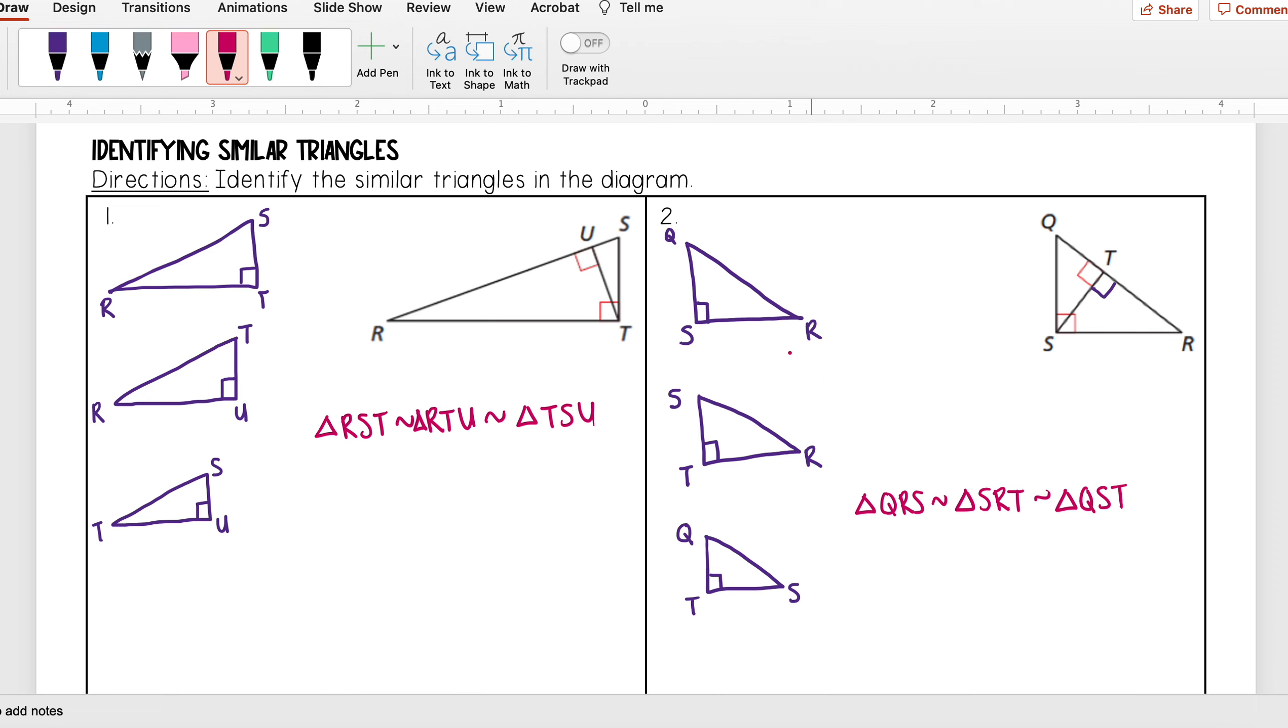And it's okay if you do it in a different order. You could have done QSR, but that means you also need to change the order of these other two, so that would be STR and QTS.